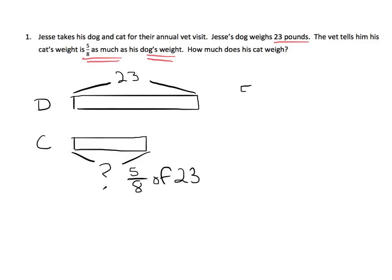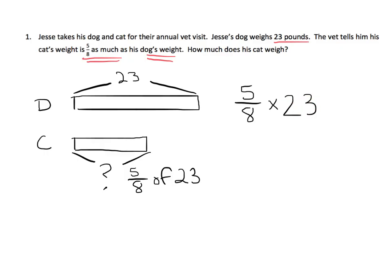It means we're going to multiply 5 eighths times 23, and this is not a convenient problem at all. It would be really convenient if this was a 24, because both 24 and 8 would be divisible by 8, but it's not, so we're just going to have to do the hard way and actually multiply. So we're going to get 5 eighths times, so that's 5 eighths, or 5 times 23 over 8, and then 5 times 23 is 115 eighths.